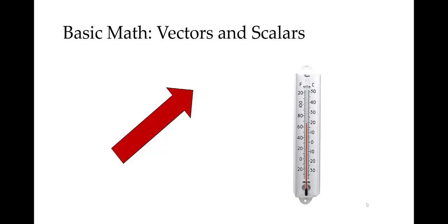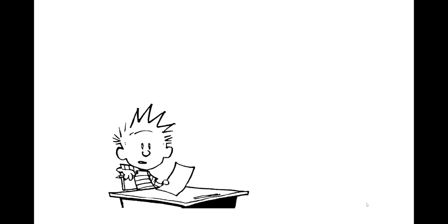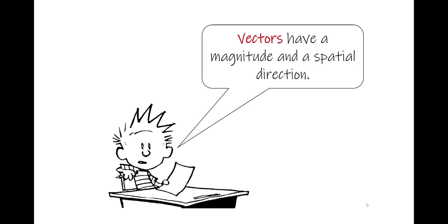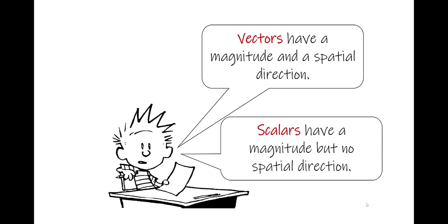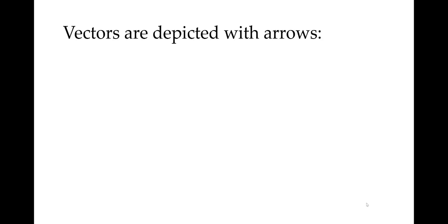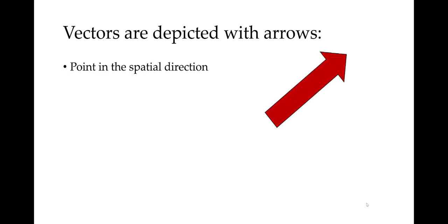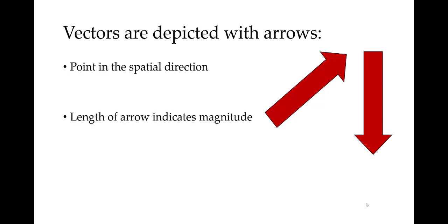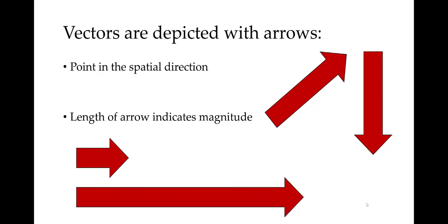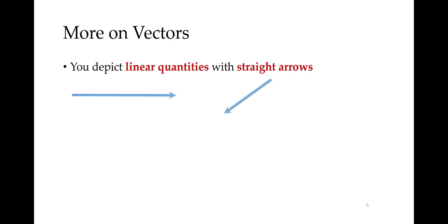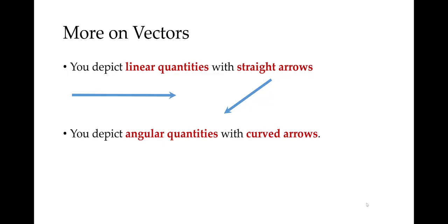A scalar is something that has magnitude, but no spatial direction. Scalar quantities include things like mass and temperature. To reiterate, vectors have a magnitude and a spatial direction, but scalars have a magnitude and no spatial direction. We depict vectors with arrows. The arrow points in the spatial direction of the vector, as you can see here with the arrow pointing up and to the right, or an arrow pointing down. The length of the arrow indicates the magnitude—a longer arrow means a bigger magnitude. You depict linear quantities with straight arrows and angular quantities with curved arrows.